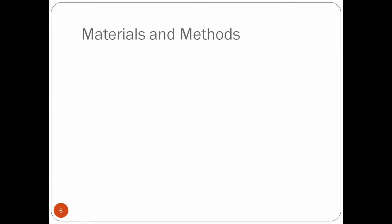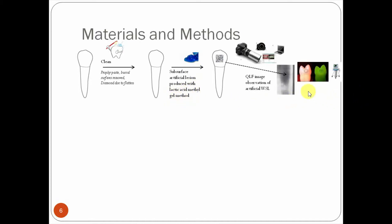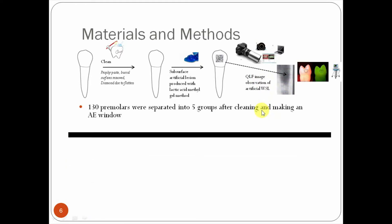Slide 6 discusses the materials and methods. So the first thing the researchers did is they got a whole bunch of teeth and they cleaned them, and they added acid to a very specific area, what they call a window over here. The acid they used is called lactic acid methyl gel. And then they wanted to look at each of the teeth underneath QLF images. Basically, they looked at it to see where they're starting at.